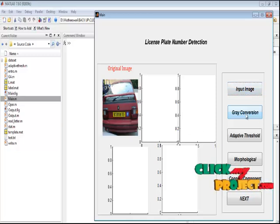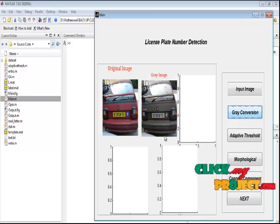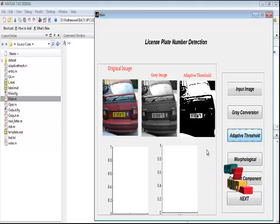By pressing the gray conversion button, we can perform the conversion operation from color to grayscale image. This grayscale image is displayed in axis two plot. By pressing the adaptive threshold algorithm button, we can perform the binarization process based on the threshold value. The binarization result is displayed in axis three plot.